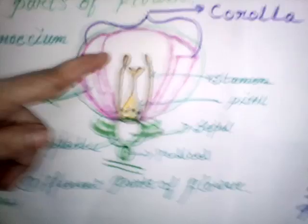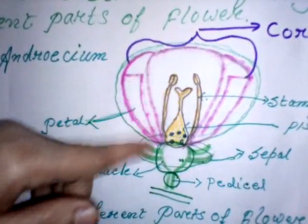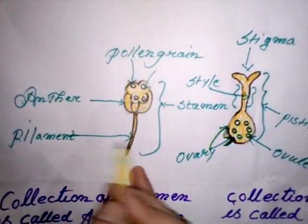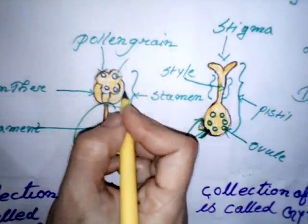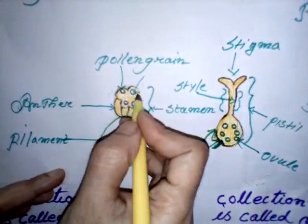The third inner part of the flower is stamen. It is the male reproductive part of a flower. Collection of stamen is known as androecium. Stamen has two parts: anther and filament. Filament is the stalk of the stamen. The swollen top of stamen is known as anther. Anther produces pollen grains, and each pollen grain bears two male gametes that help in reproduction.